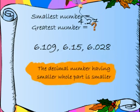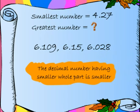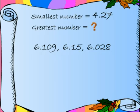You know the reason? The decimal number having smaller whole part is smaller. But what about the greatest number? How do we find that?